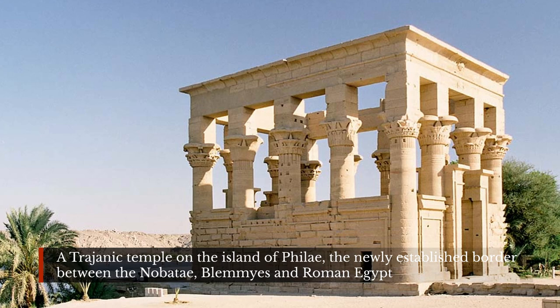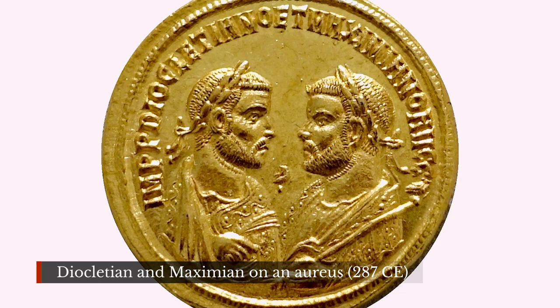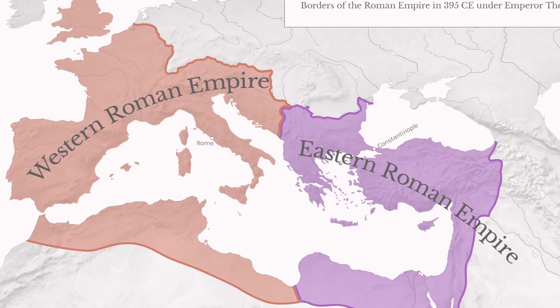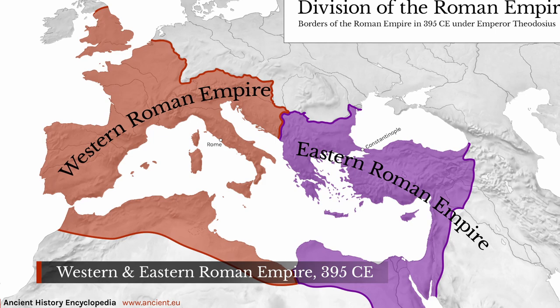Diocletian stabilized the economy by issuing a better standard of currency and enacted the Tetrarchy — Rule of Four — where the responsibilities of governing the vast empire were divided between separate rulers whose successors were already in place when they assumed their positions. Finally, he famously divided the vast realm into the eastern Byzantine and western Roman empires to encourage stability and easier administration. Although he may have hoped this move would ensure Rome's future, the two empires competed with each other more than they worked together, contributing to the decline and fall of the western Roman Empire.